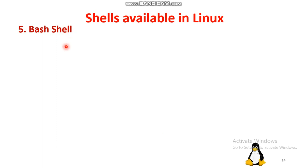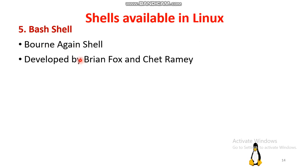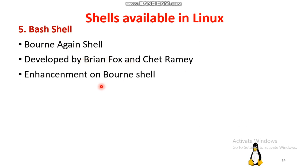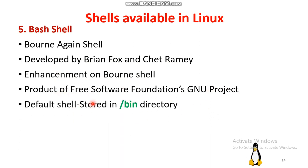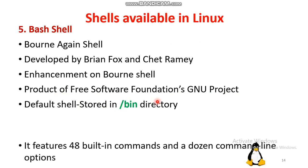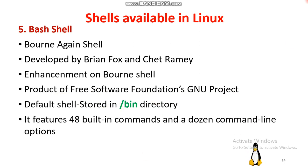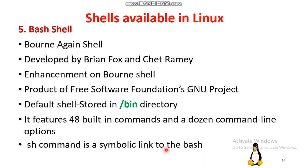The fifth type is the Bash shell, abbreviated as Bourne Again Shell. It was developed by Brian Fox and Chet Ramey and is an enhancement of the Bourne shell. It is a product of the Free Software Foundation project, stored in the /bin directory. It has 48 built-in commands and a number of command line options, and the 'sh' command is a symbolic link to bash.